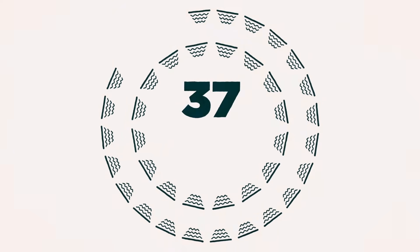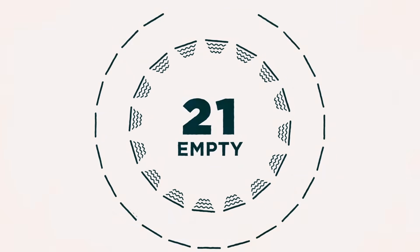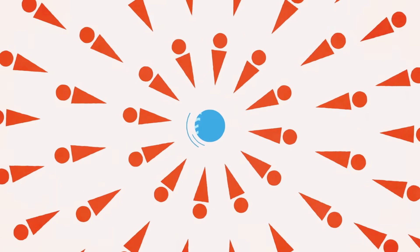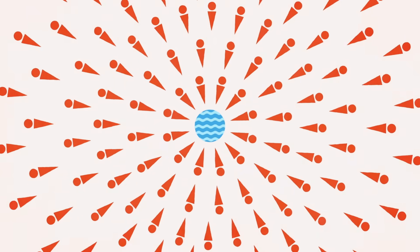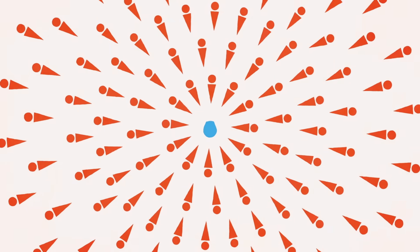Of Earth's 37 major underground reservoirs, 21 are on track to be irreversibly emptied. So while it's true that our planet isn't actually losing water, we are depleting the water sources we rely on at an unsustainable pace.